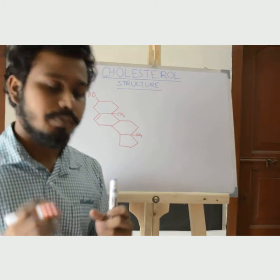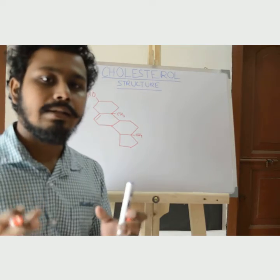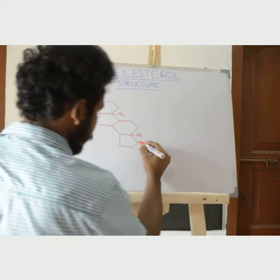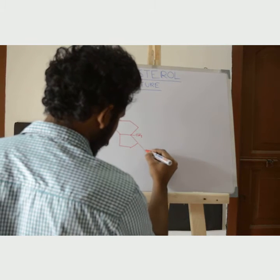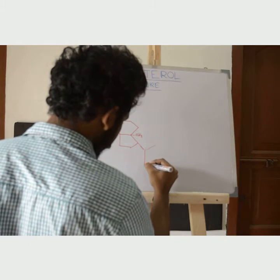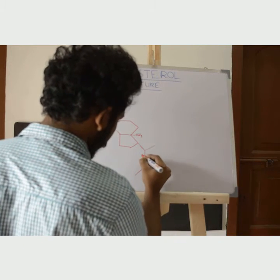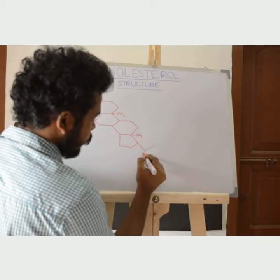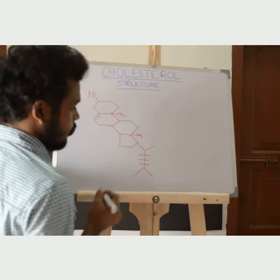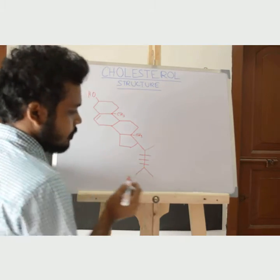To draw the short hydrocarbon chain, you have to imagine a man stretching out his two hands and two legs like this. Then drop three straight lines in between, and consider all these points as a carbon atom.